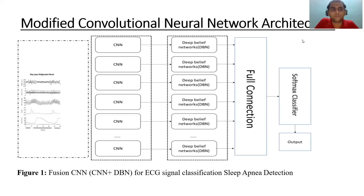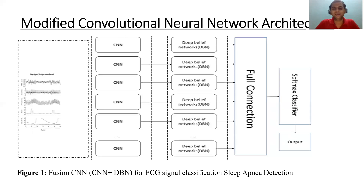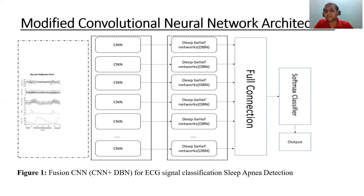This is our modified convolutional neural network architecture, in which there are different wave blends of sound — or snoring, typically — and we pass them through a 16-layer architecture of convolutional neural network, followed by an 8-layer architecture of deep belief network, known as DBN. When these are integrated, we use a softmax classifier, and the final output indicates whether the patient is in a sleep apnea condition or not.